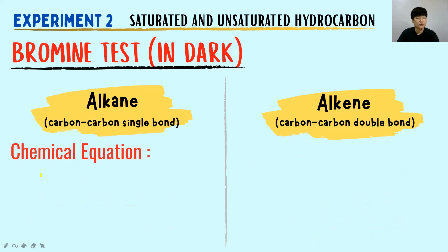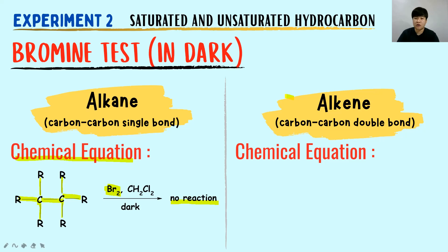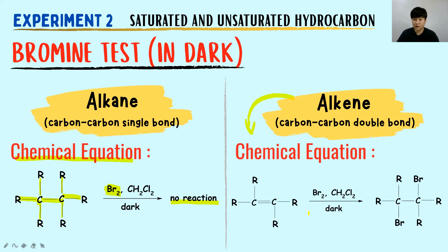For the chemical equation of alkane in the bromine test, the alkane has all carbon-carbon single bonds — everything is in single bond, that's why it is a saturated hydrocarbon. When in the bromine test, the reddish-brown color of bromine remains unchanged because there is no reaction.